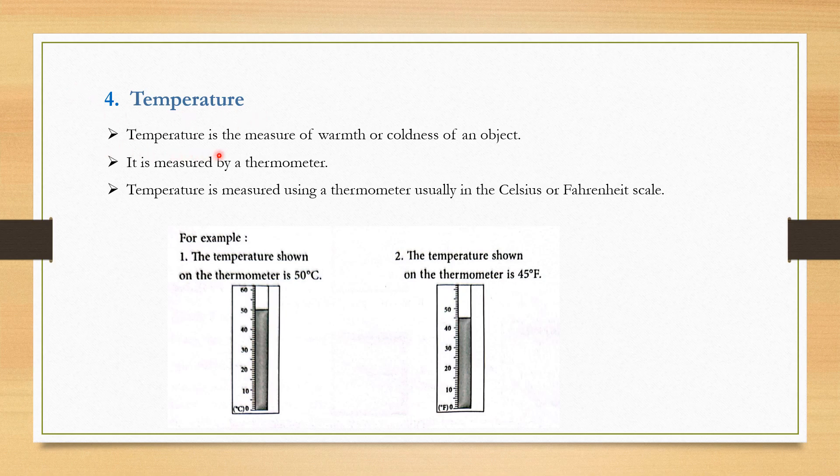Temperature is the measure of warmth and coldness of an object. It is measured by a thermometer. Temperature is measured using a thermometer usually in the Celsius or Fahrenheit scale. For example, the temperature shown on the thermometer is 50 degree Celsius. The temperature shown on the thermometer is 45 degree Fahrenheit.